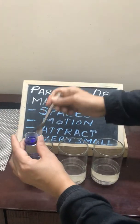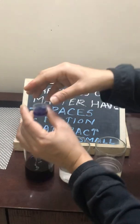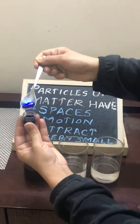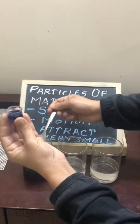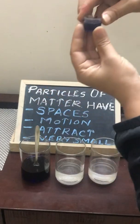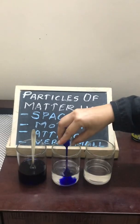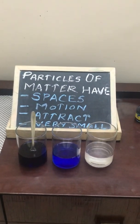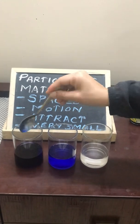This experiment shows us that particles of matter are very, very small. How do we know that? I take another 5 ml from the first glass and add it to the second glass. You can see the color is there but it has faded — the first glass has a very dark color, while the second has color but it is much lighter.